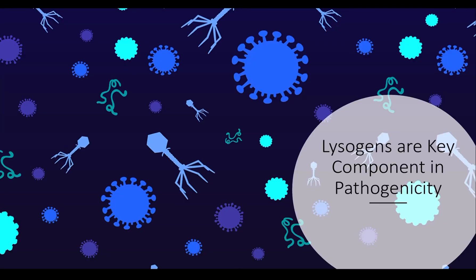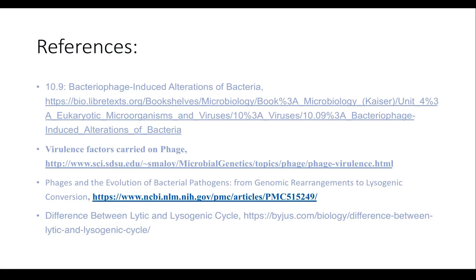Overall, the lysogenic cycle is a key component in the pathogenicity of bacteria. Viruses are difficult to treat because of this method, but also play a key component in the modern aspects of research, such as gene therapy and the use of viral vectors. However, it still marks just one small aspect in the complex world of microbiology.